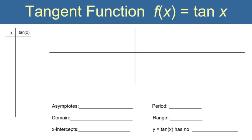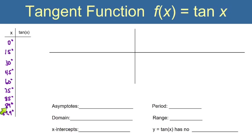Let's generate our own graph of the tangent function using our calculators. We'll start at 0 degrees and go every 15 degrees until we get to 75. Using our calculators, tangent of 0° is 0, tangent of 15° is 0.27, tangent of 30° is 0.58, and tangent of 45° is 1. That's a nice whole number, and 45 degrees will be easy to find on the x-axis.